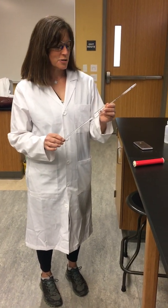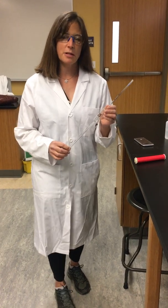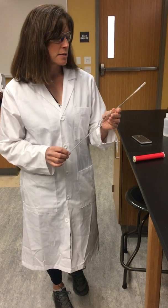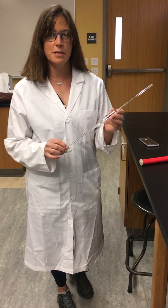All right, so now we're going to introduce what's called a volumetric pipette. A volumetric pipette is another way that we can measure volume, and the level of precision of a volumetric pipette is to two decimal places.